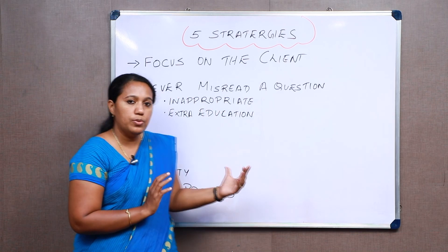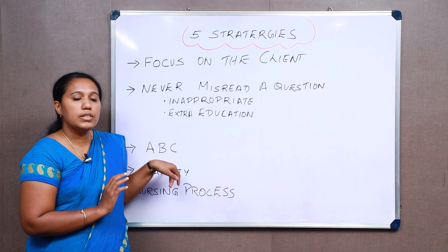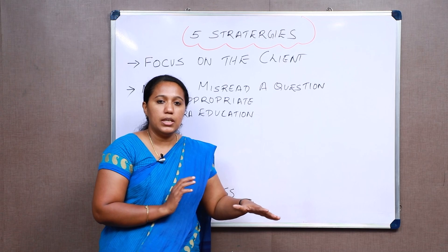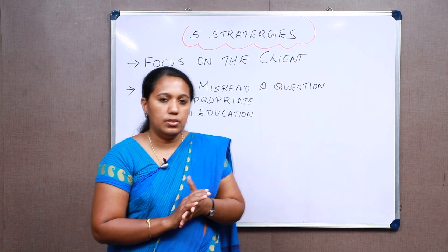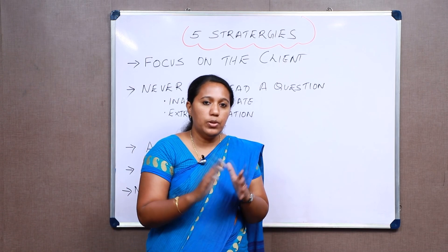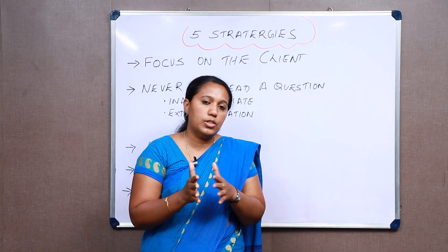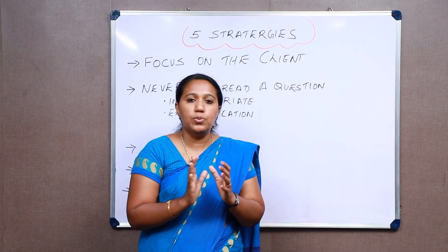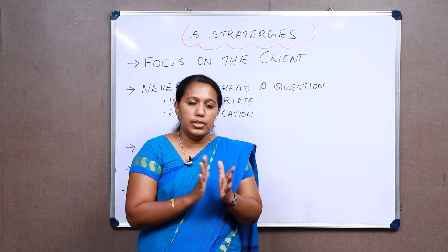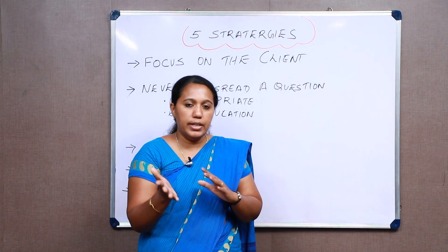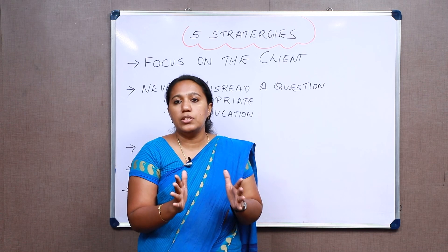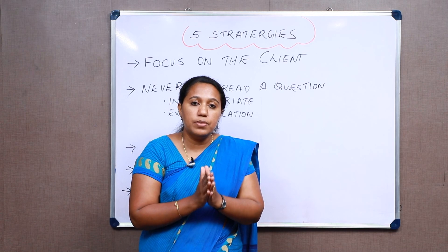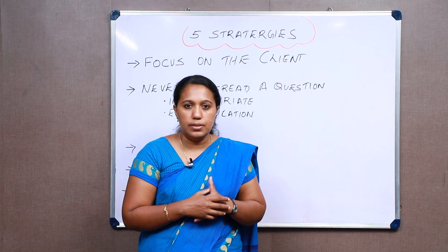The third strategy is to concentrate on ABC — that is, Airway, Breathing, and Circulation. When you have questions which ask what is the first thing to give importance to, or what is the priority, in such a case you will give importance to airway first, because that is the first thing that you need to deal with.